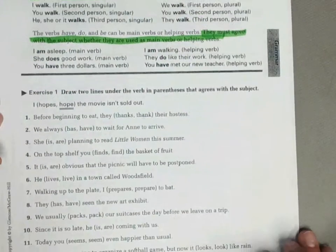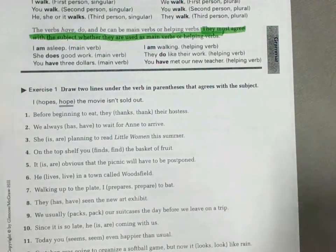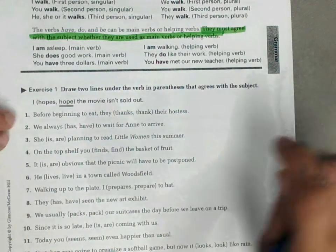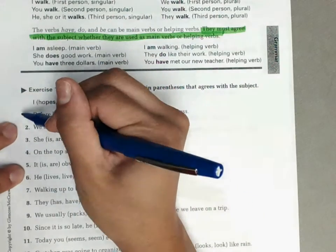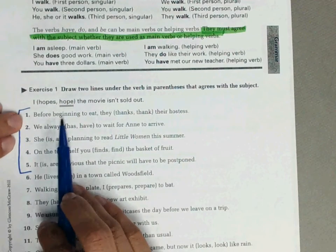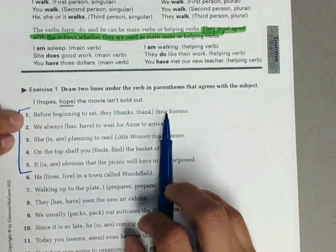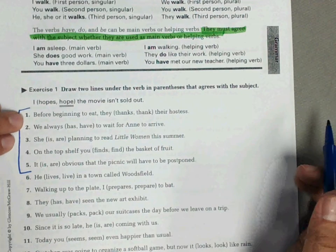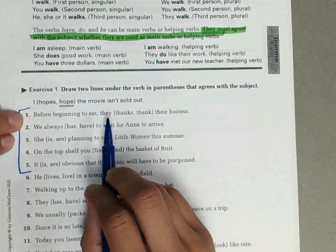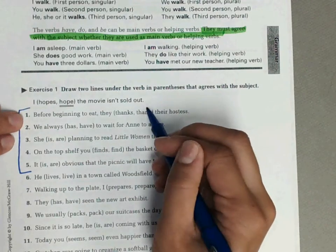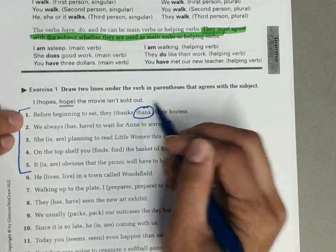Exercise one says: draw two lines under the verb in parentheses that agrees with the subject. I'm going to do one through five with you. Number one: Before beginning to eat, they thanks their hostesses or they thank their hostesses. They is plural, so we need to pick the plural verb, which is thank.